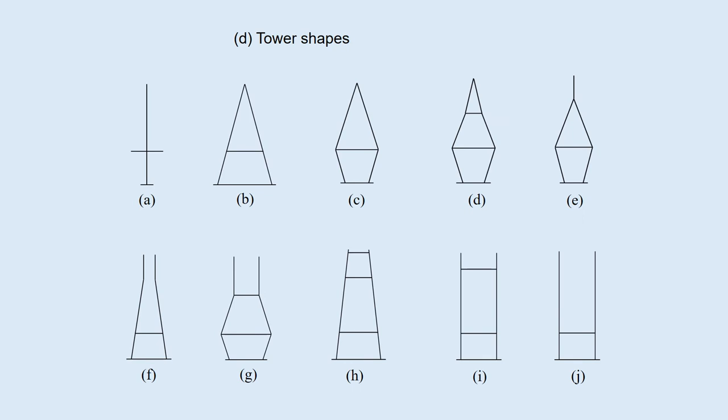Tower shapes. There are plenty of different tower shapes. Some of them are shown here. They are classified into three groups. The one column type A, the A-shape type B, C, D, and E, and the H-shape type.